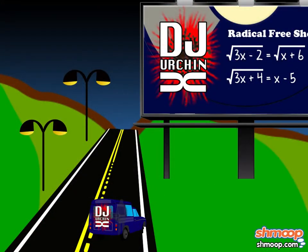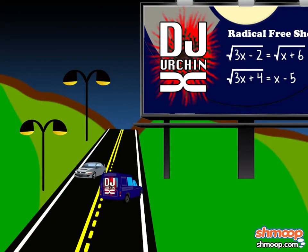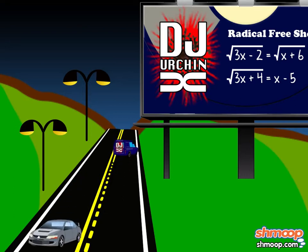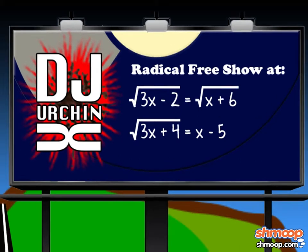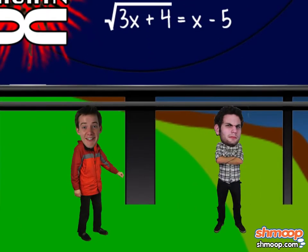Your favorite underground electronica artist, DJ Urchin X, is spinning beats at a secret location. He's left two clues, both in the form of a radical expression. Solve them, and you'll be one of the first people on Earth to hear his new music.